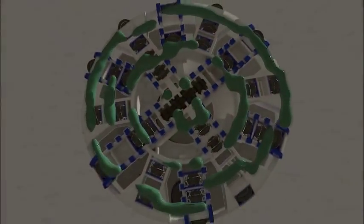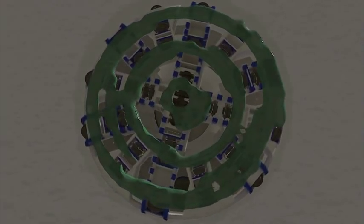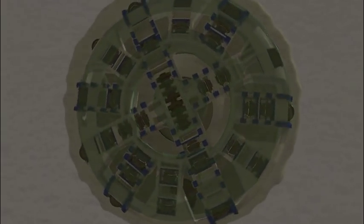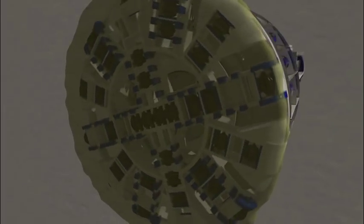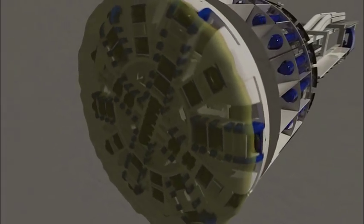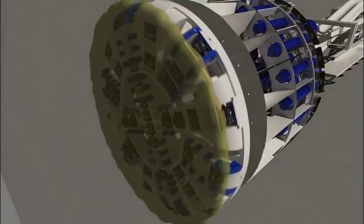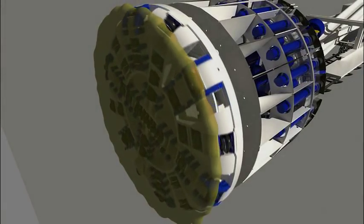Depending on the ground conditions, additives can be injected into the face through multiple points on the cutter head. With additives, the face of the tunnel is more stable and is less likely to collapse during excavation. The additive may consist of foam, polymer or bentonite.